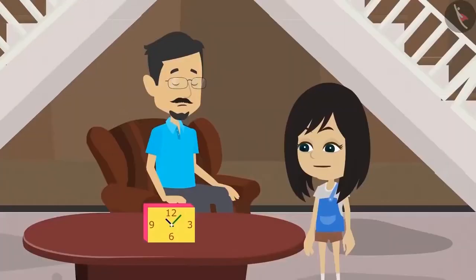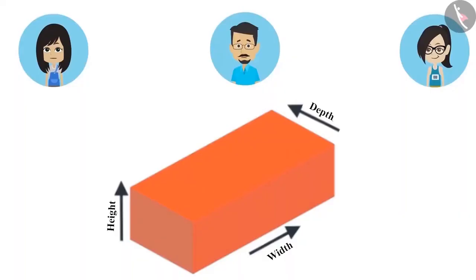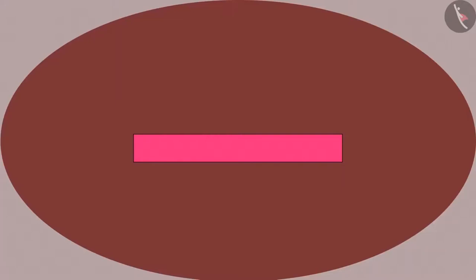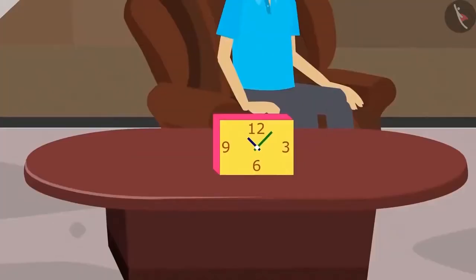Yes, we had learned this while learning about bricks. To measure bricks, we use three dimensions. And because of these three dimensions, an object appears to be having different shapes when viewed from different sides. For example, when you look from the top, the clock looked like a rectangle. But when you saw from the front, you could see a clock.